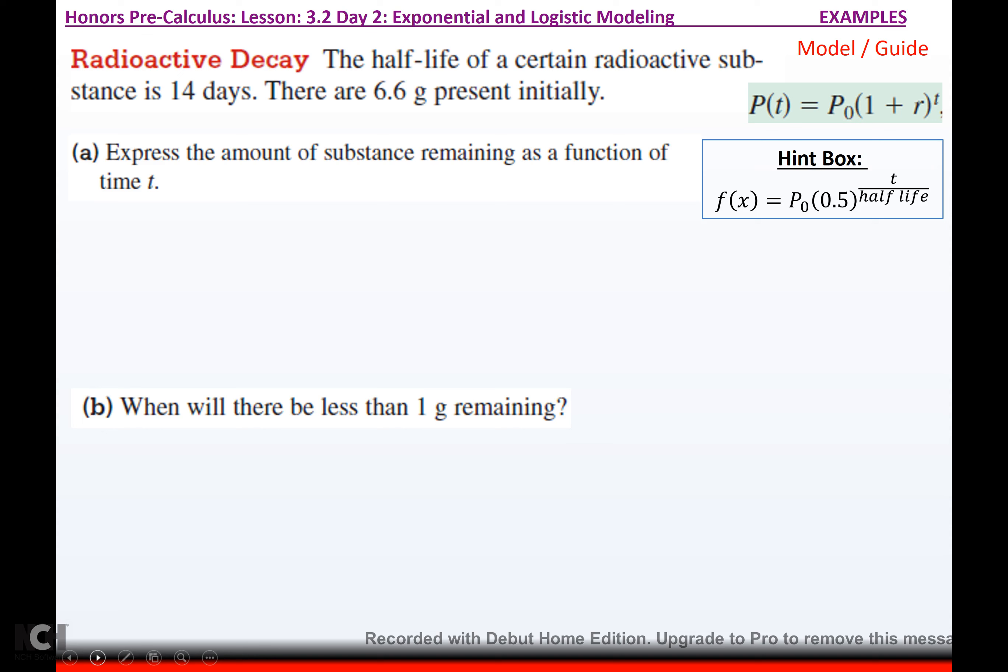Radioactive decay. It says the half-life of a certain radioactive substance is 14 days. There are 6.6 grams present initially. This is a population control. The population is this radioactive substance. But remember, when you're talking about half-life, that just means your base becomes 0.5. It becomes a half. So, it says express the amount of substance remaining as a function of time T. Well, my population, we'll say F of T, I guess I should say for time, is going to be the initial amount, which was 6.6 grams, times a half to the time over the half-life of the substance. And it tells me that the half-life of the substance is 14 days. So, there's my expression.